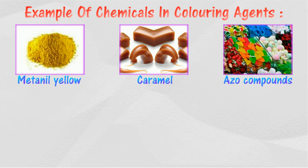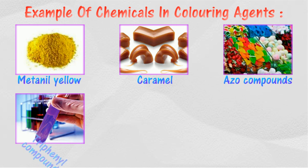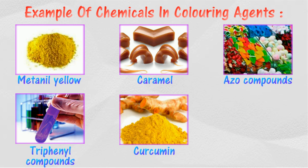Synthetic dyes, which have red, orange, or yellow colors. Tartrazine, which is an orange color, is added to orange drinks and apricot jam. Triphenol compounds contain green, blue, or purple colors. Brilliant blue gives color to sweets. Curcumin is an orange-yellow color.